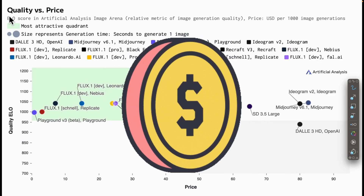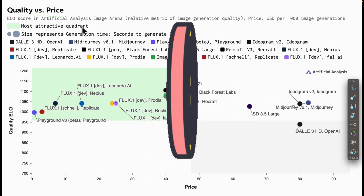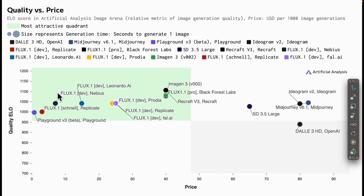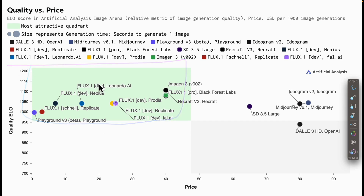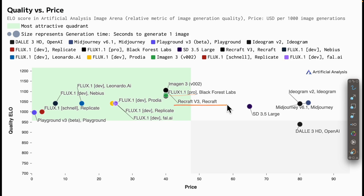If we also want to compare quality versus price, here's another metric. The price is $1 USD per 1,000 image generations. The best quadrant is the top left because it has the lowest price and also the highest quality image generation. Based on this chart, Imagine 3 from Google has the highest quality and also the lowest cost, second by Flux 1.1 Pro and Recraft v3.